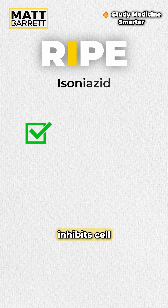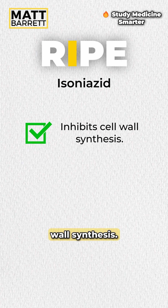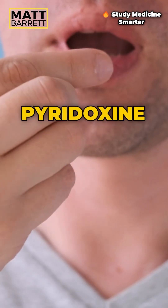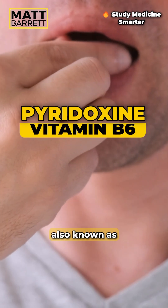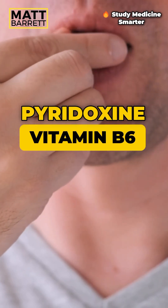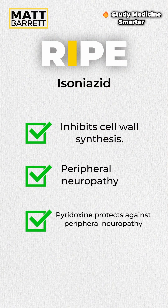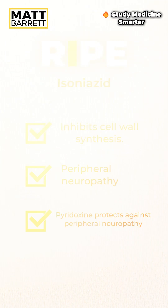Isoniazid inhibits cell wall synthesis. An important side effect is peripheral neuropathy, which is why we give pyridoxine, also known as vitamin B6 — pyridoxine protects against peripheral neuropathy.